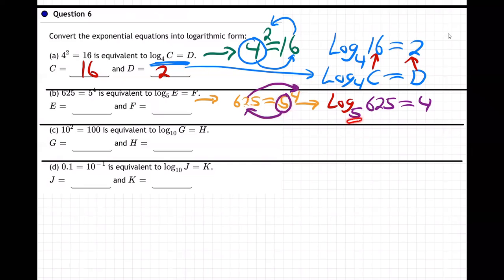So the base right here, 625 and back. And so that's supposed to compare with log base five of E equals F. So then the E is clearly 625 and the F is four. E is 625 and F is four.